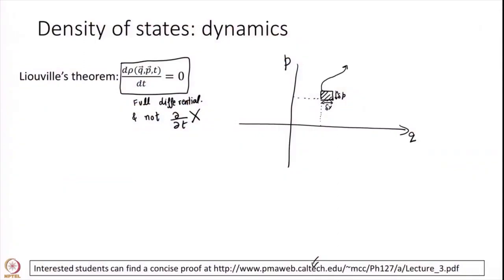Liouville asks the question: I have this very small box — how does this box change with time? How does it evolve? Each particle in this box has some dynamics, and I end up getting a new box that perhaps looks different, with some new delta Q prime and new delta P prime. Liouville says that delta Q times delta P equals delta Q prime times delta P prime. So the volume of this little box does not change with time — it can get reconfigured, its shape may change, but the volume will not.